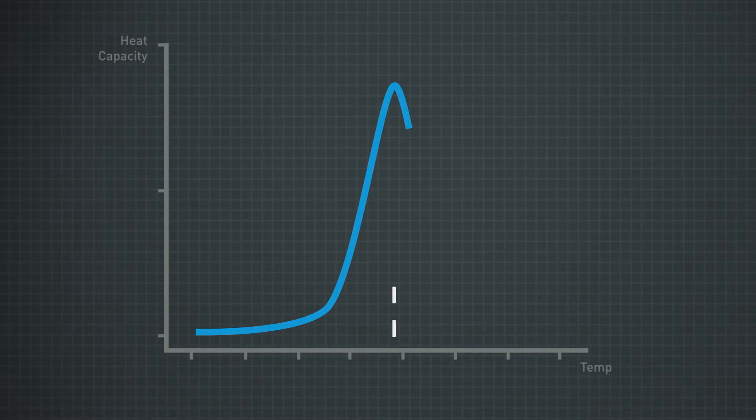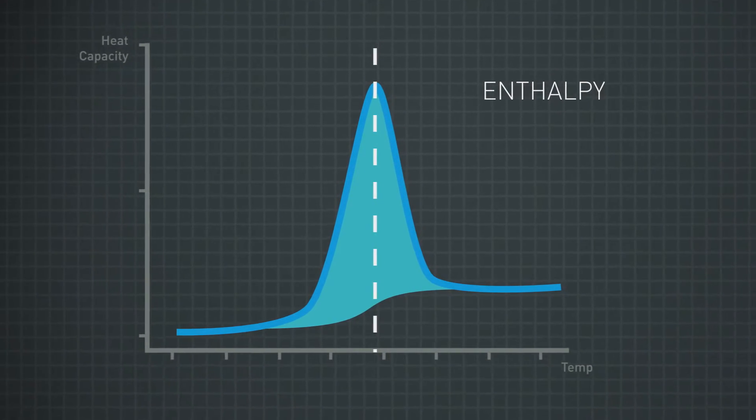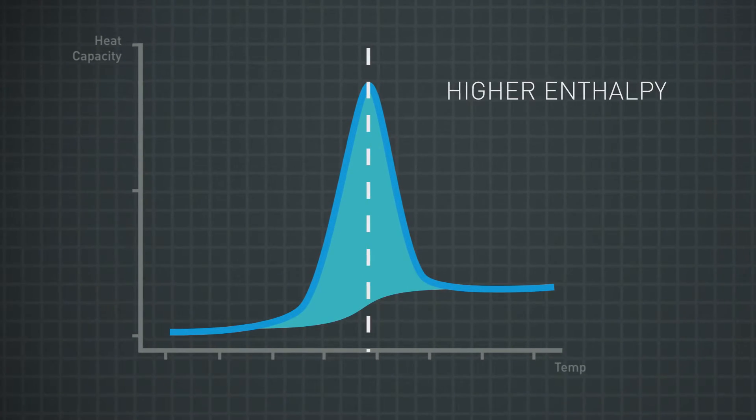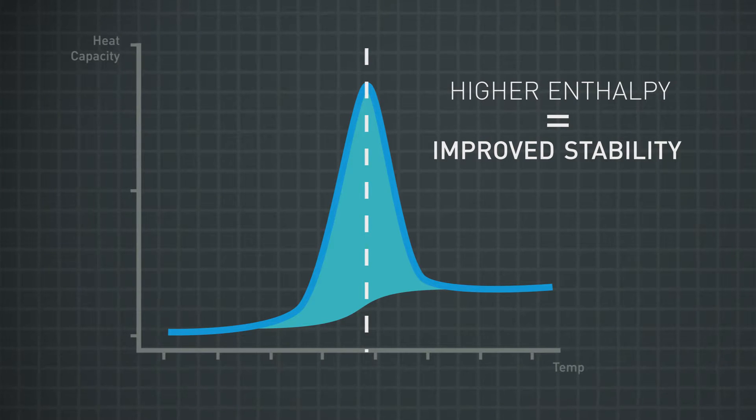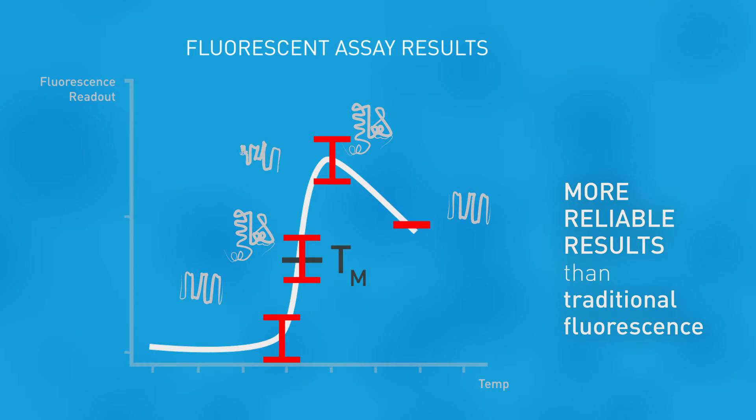DSC also measures enthalpy, a measure of the energy needed to break the non-covalent bonds which keep the protein folded. Higher enthalpy indicates improved stability. During stress testing, DSC is more reliable than Tm measurements from intrinsic or extrinsic fluorescence, which frequently introduce unwanted artifacts or unexpected Tm shifts.